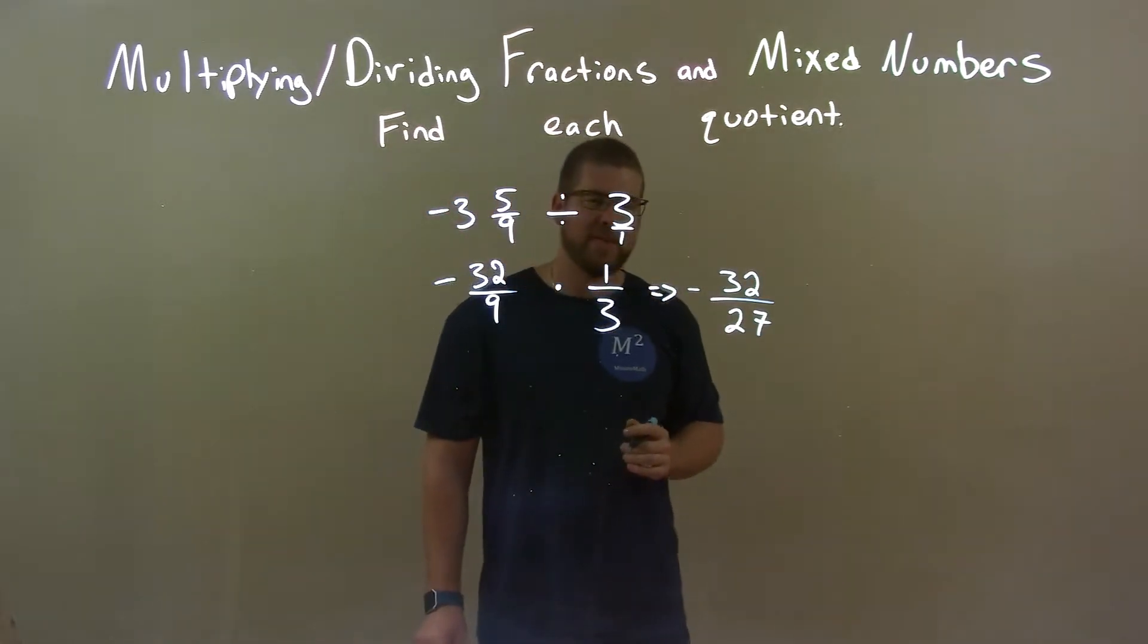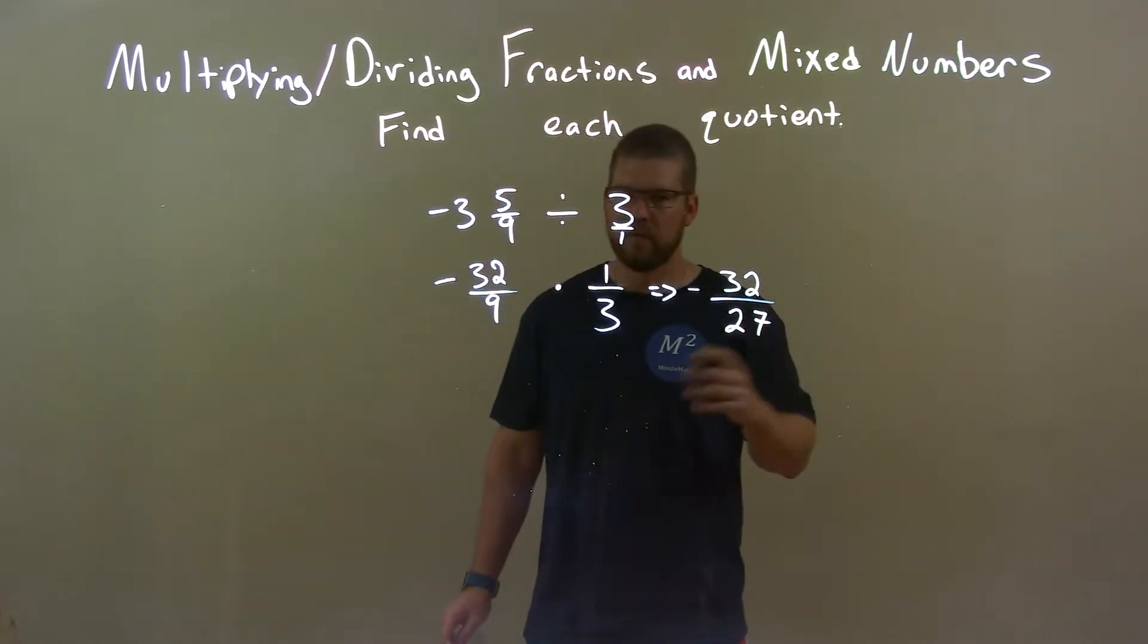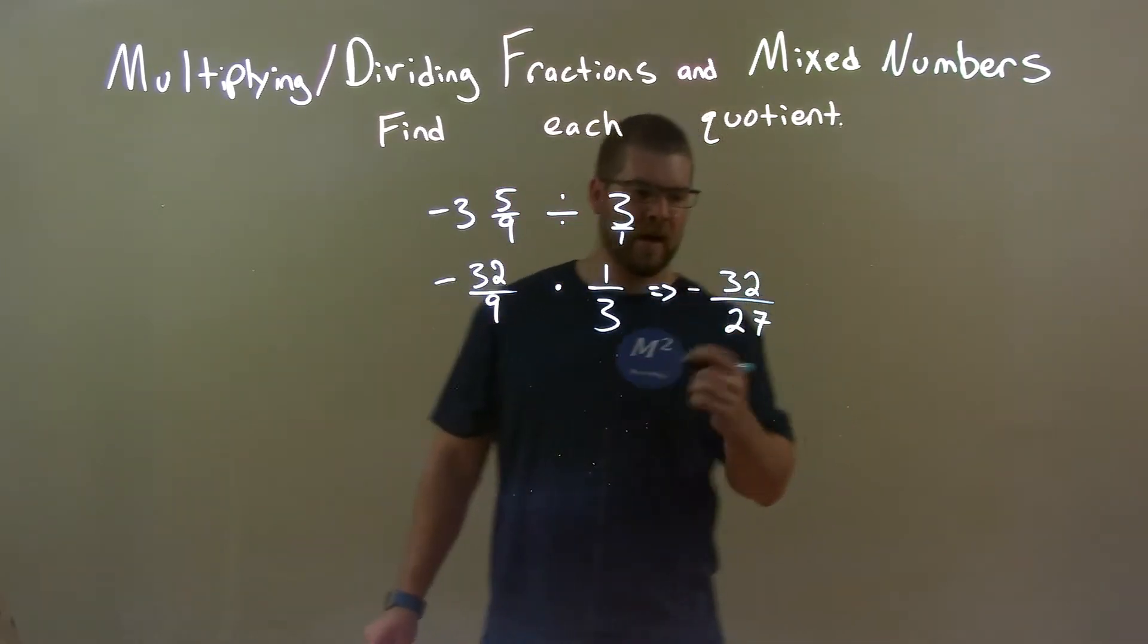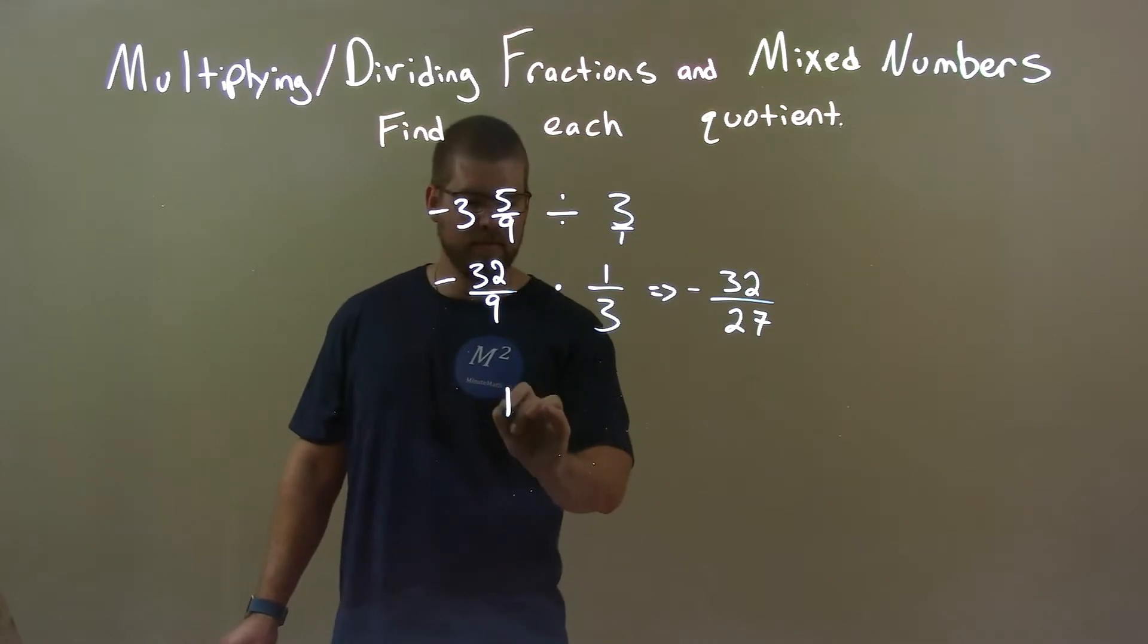So now I want to write this as a proper fraction. I have an improper fraction, I need to write that as a proper fraction. So we have to do that. Well, 27 goes into 32 one time. 27 times, so 32 minus 27.